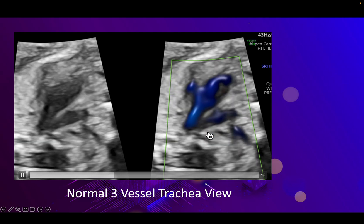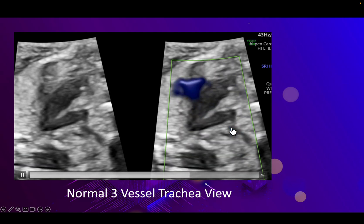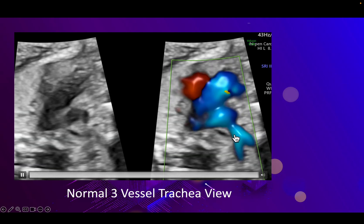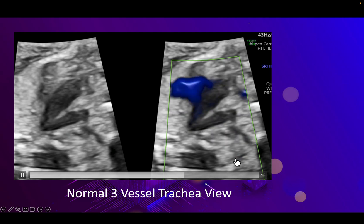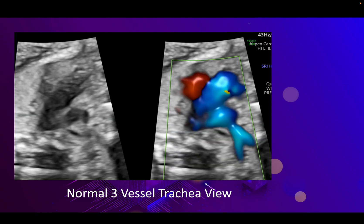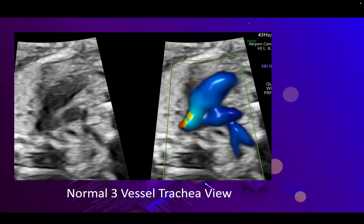The left subclavian artery is also visible, and you can actually see it branching into the vertebral artery and the subclavian artery.